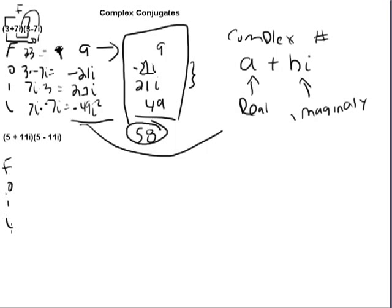When we FOIL this, 5 times 5 is 25. The outers, negative 55i. The inners, positive 55i. And the last are negative 121i squared.